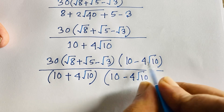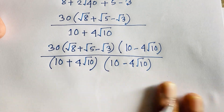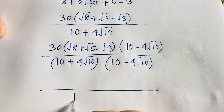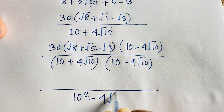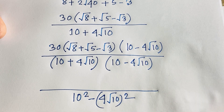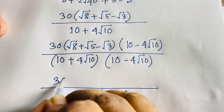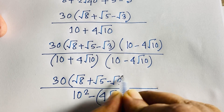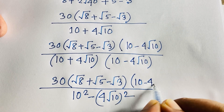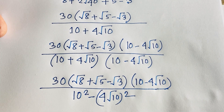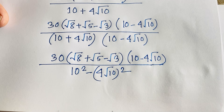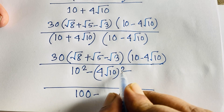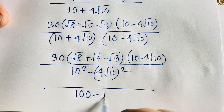I apply the conjugate again: multiply by (10 − 4√10) over (10 − 4√10). Using (a+b)(a−b) = a² − b², the denominator becomes 10 squared minus (4√10) whole squared, which is 100 minus 16 times 10, equal to 100 minus 160, giving −60.